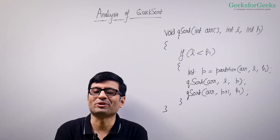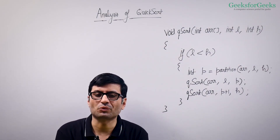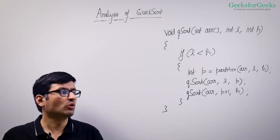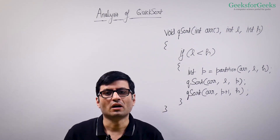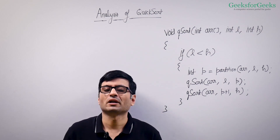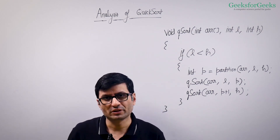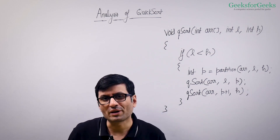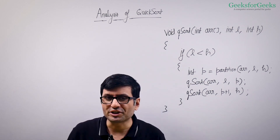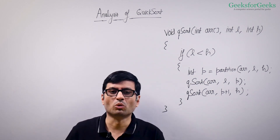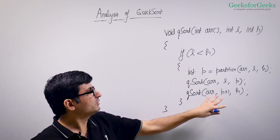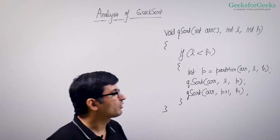In this video we are going to talk about analysis of QuickSort. For analysis purposes I have considered Hoare's partition. However, the time complexities in both Hoare's partition and Lomuto partition are going to be the same. In fact, the extra space requirements are also going to be the same in both partition algorithms. The naive partitioning algorithm however requires some more extra space. Let us take a look at this algorithm and analyze it for different cases.